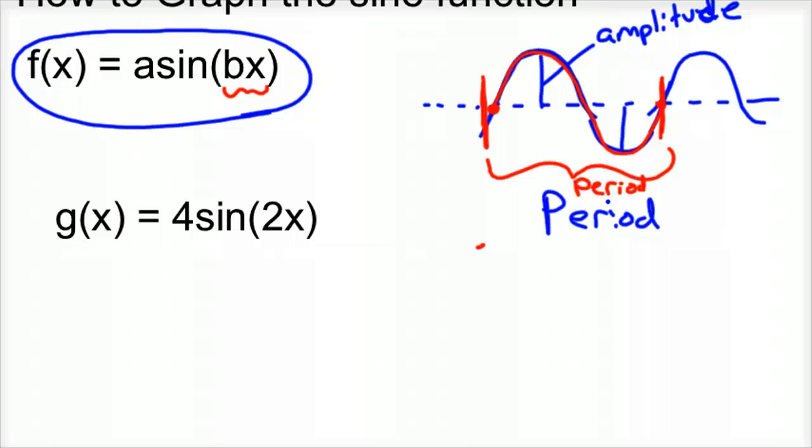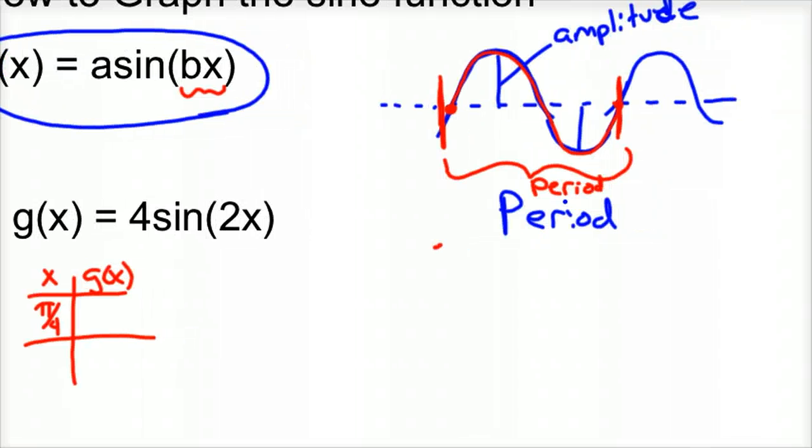For instance, you could just make a table and graph these. Start out with, think in terms of radians. So maybe you want to do 45 degrees, which is pi over 4. You'd plug that in and get a value. And you could do that as much as you want. But let me just show you quickly the tricks to graph this thing.